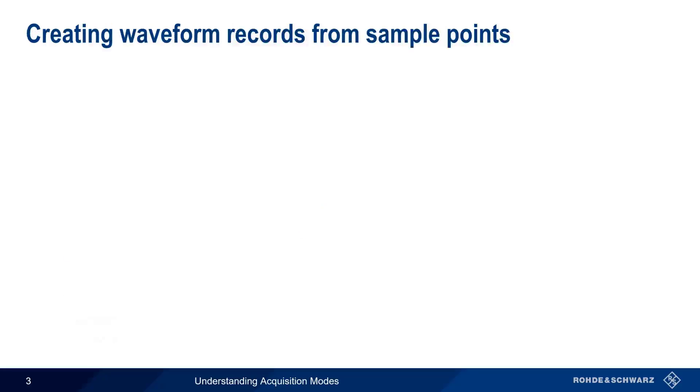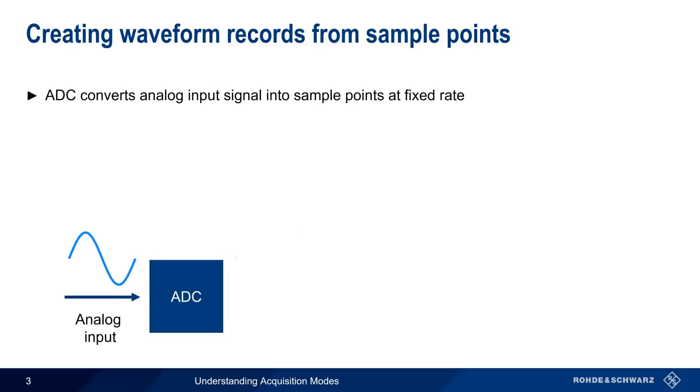In a modern digital oscilloscope, an analog input signal is converted by an ADC, or analog to digital converter, into sample points at a fixed rate. Depending on the horizontal scaling, the number of sample points produced by the ADC often greatly exceeds the number of points needed to create the waveform that will be displayed on the oscilloscope screen.